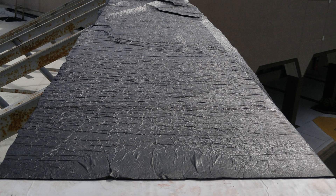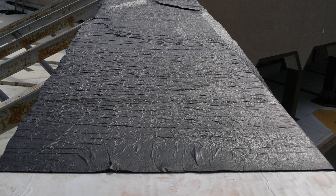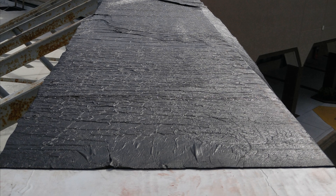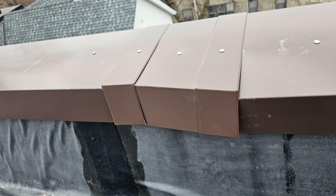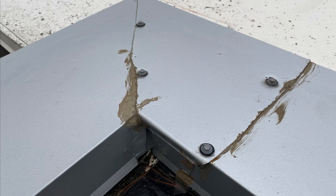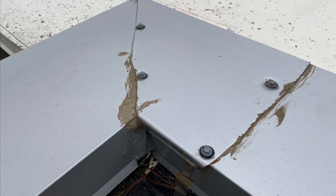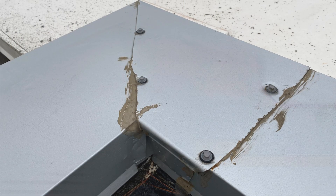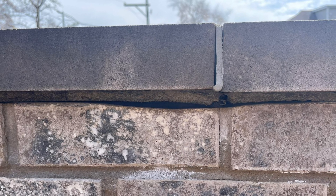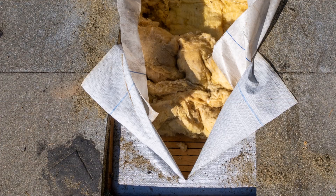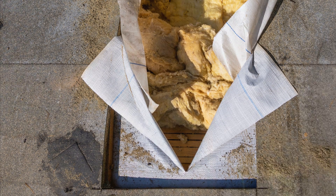We also want to make sure that we have a flashing membrane underneath our coping, whether it's a metal coping or a coping stone with a small drainage gap. Water always finds a path inside this space, and we need to protect the moisture-sensitive framing from water infiltration. The drainage gap alleviates any potential hydrostatic pressure that could build up and drive water into penetrations in that flashing membrane. This is a bigger deal with coping stones, but it's still best practice to provide this gap to prevent potential leaks.